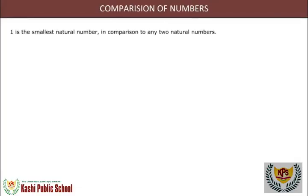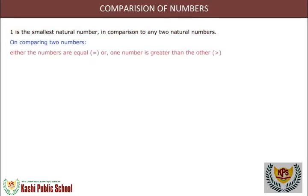Here we will learn to compare numbers. One is the smallest natural number. When comparing any two natural numbers, either the numbers are equal, or one number is greater than the other, or one number is less than the other.